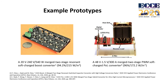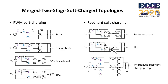Here are two examples of merged two-stage hybrid switch capacitor converters our group presented at this year's APEC. This is a resonant soft-charged boost converter, and this is a PWM soft-charged point-of-load converter, both with high efficiency and high power density. The merged two-stage soft-charging technique is a general design approach that is widely applicable. The PWM current source can be implemented by buck, two-level buck, buck-boost, and DLB converters. The resonant current source can be implemented by series resonant, LLC, and resonant charge pump converters.